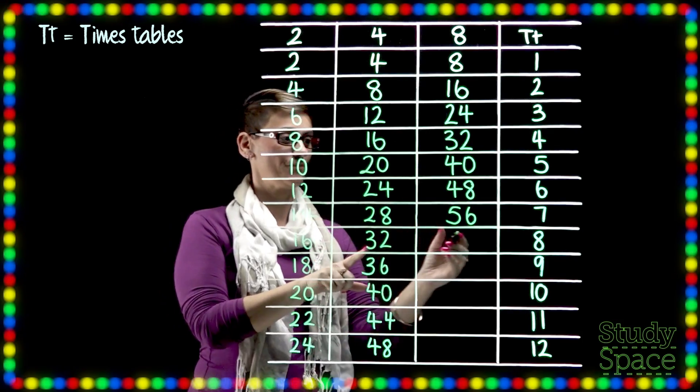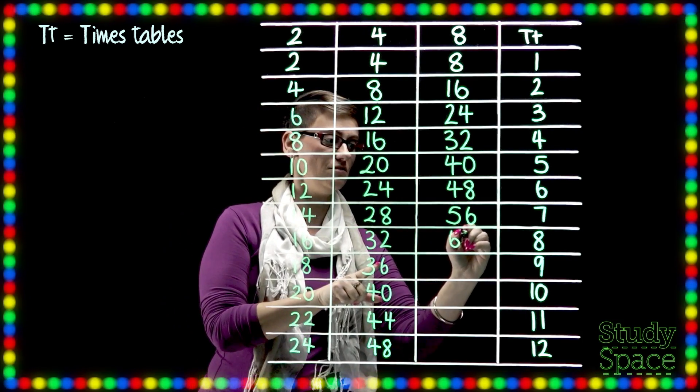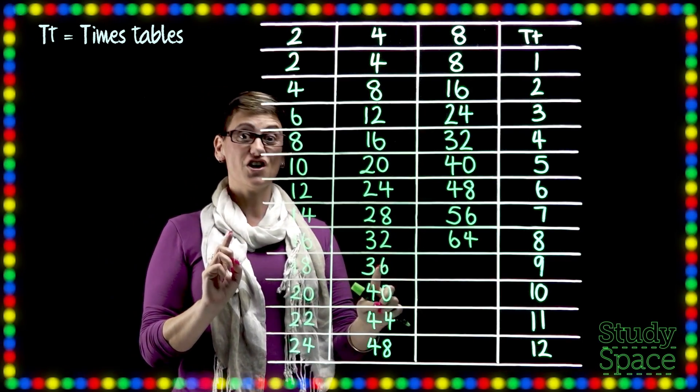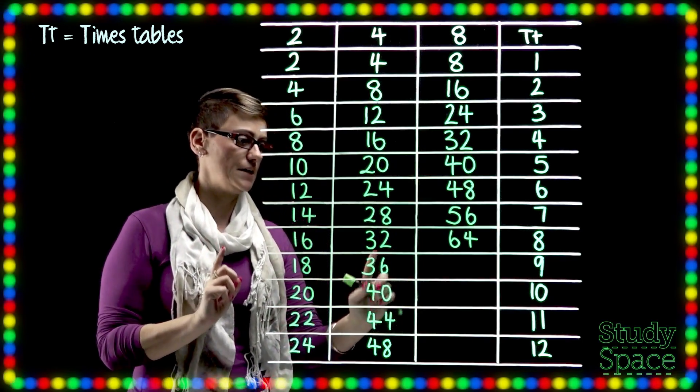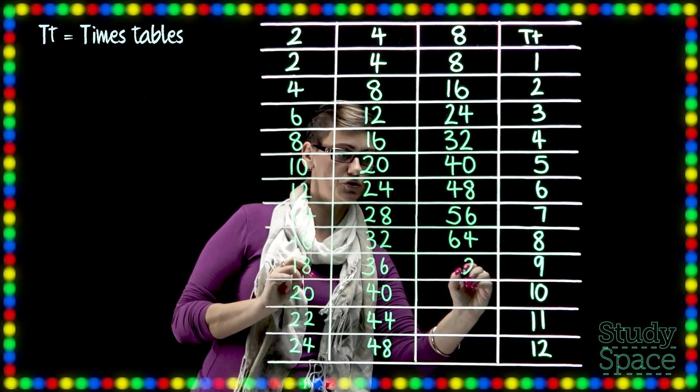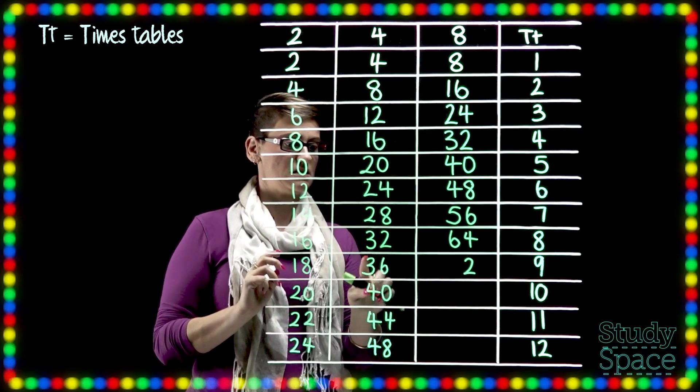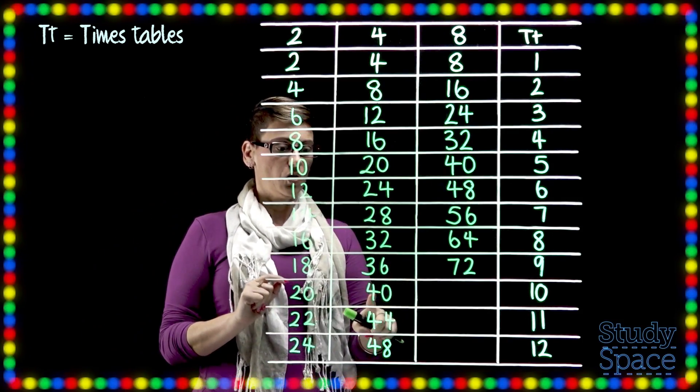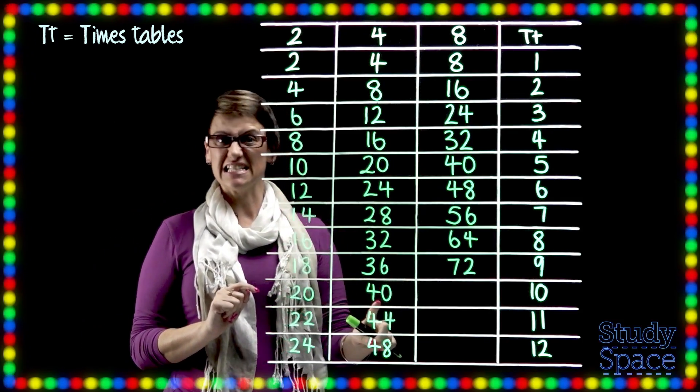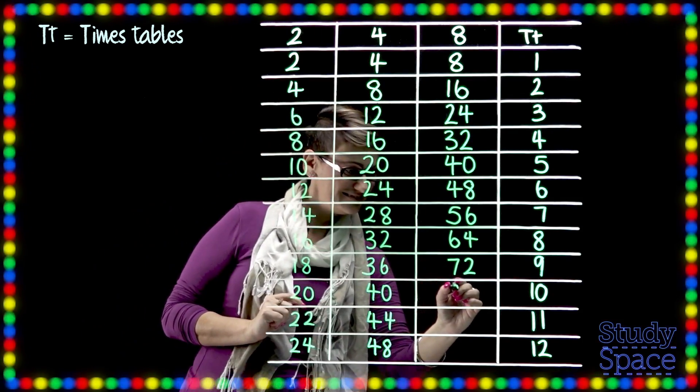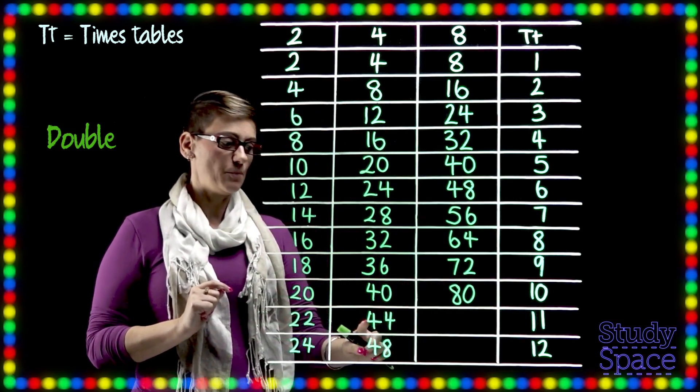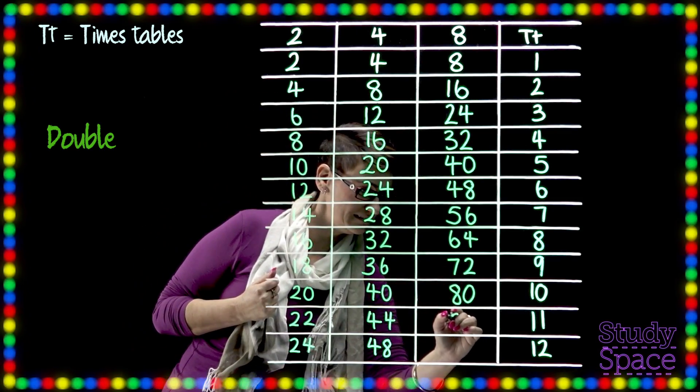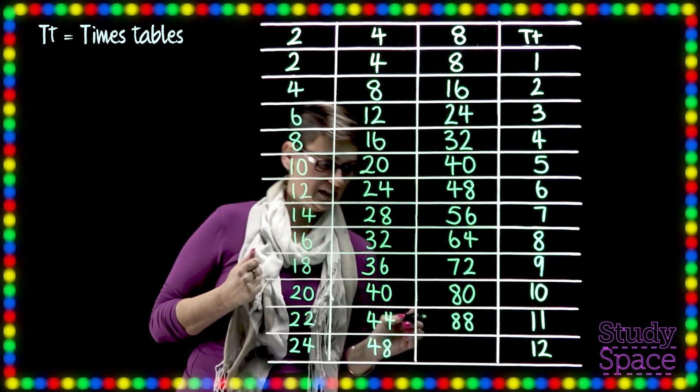Okay. Double 32 is 64. For some reason that number always sticks in my head. Double 36. Okay so 2 6's are 12. So we'll put the 2 plus 6 plus 1 is 7. So 72. Double 40 is 80. Double 44 is 88.